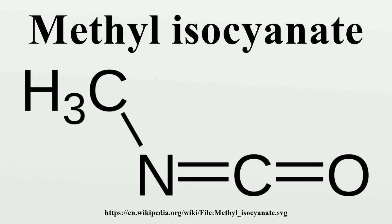Methyl isocyanate is an organic compound with the molecular formula CH3NCO. Synonyms are isocyanatomethane, methylcarbilamine, and MIC. Methyl isocyanate is an intermediate chemical in the production of carbamate pesticides. It has also been used in the production of rubbers and adhesives.